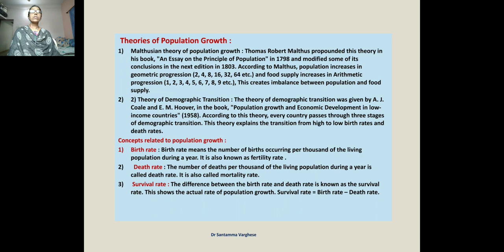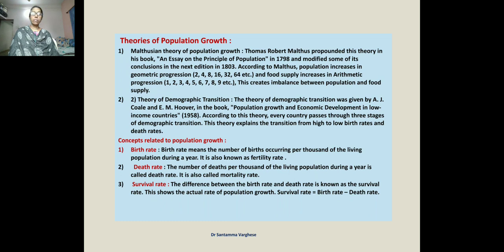Next we study theories of population growth. There are two theories: first, the Malthusian Theory of Population Growth, and second, the Theory of Demographic Transition. The Malthusian Theory of Population Growth was propounded by Robert Thomas Malthus in his book 'An Essay on the Principle of Population,' published in 1798.